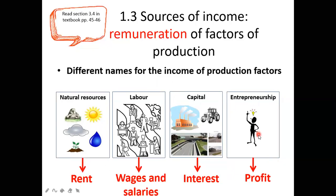To summarize the returns: the return for entrepreneurship is profit; for capital it is interest; for labor it is wages and salaries; for land it is rent. If you have land, you are paid rent. If you offer your labor services, you are paid wages and salaries. The return for capital is interest, and for entrepreneurship you earn a profit.